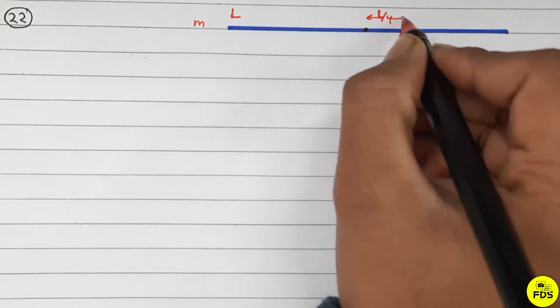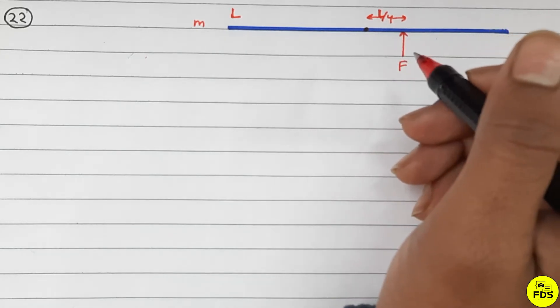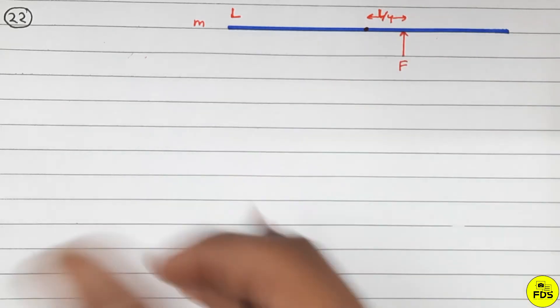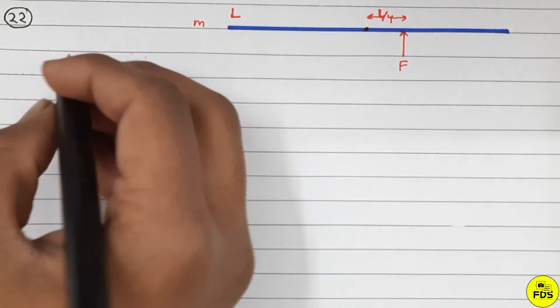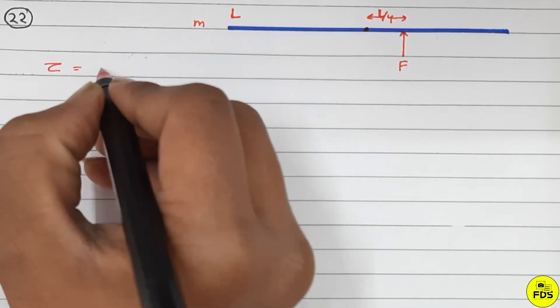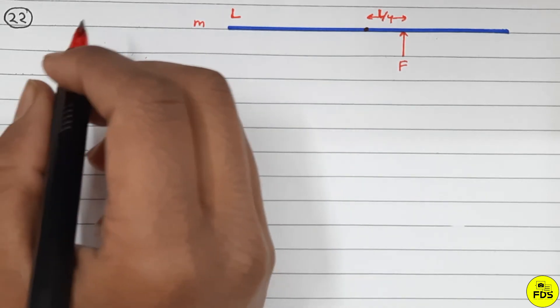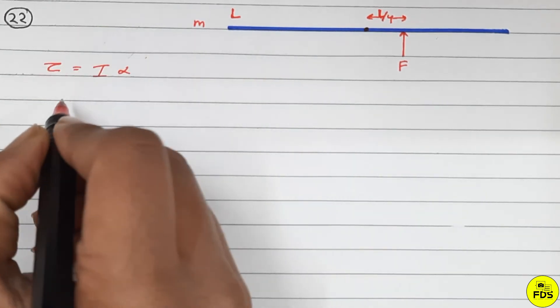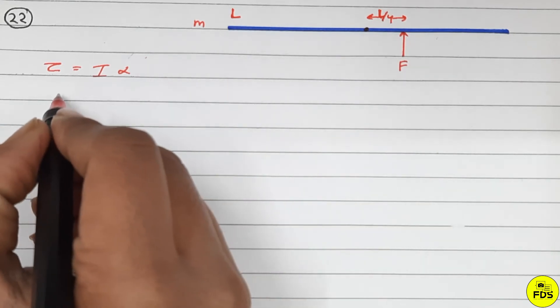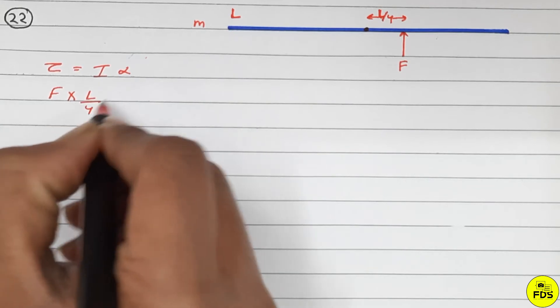We need to find the angle. In this case, torque equals I alpha, which is moment of inertia times angular acceleration. The torque is force times perpendicular distance: F times L by 4 equals